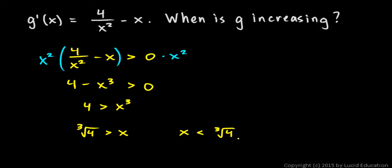That's the answer. If you wanted to write this in interval notation, this would be any number less than the cube root of 4, so negative infinity on the left and cube root of 4 with an open interval on the right. Those are the x values for which function g is increasing, expressed as an inequality or in interval notation.